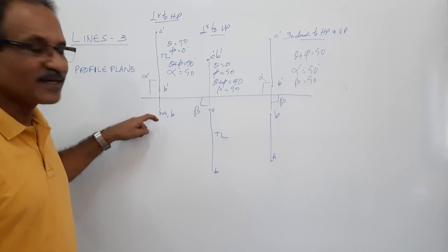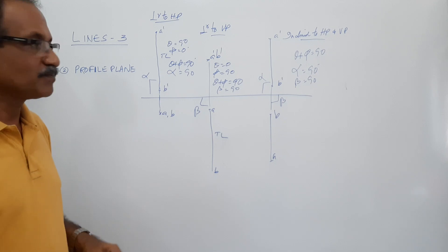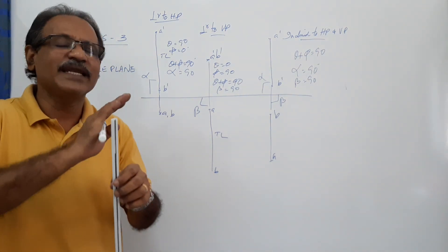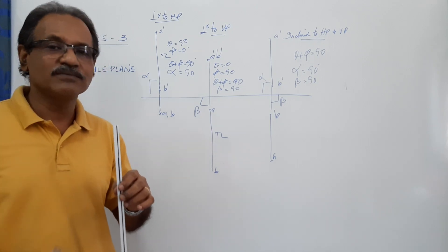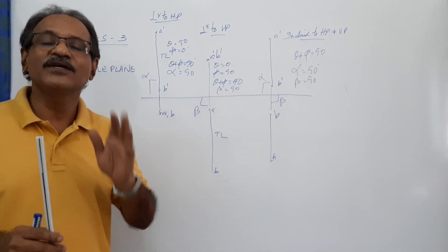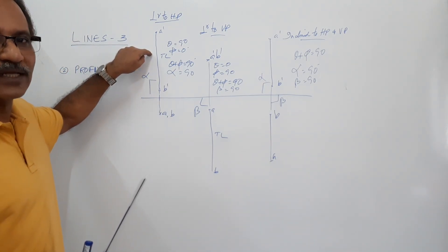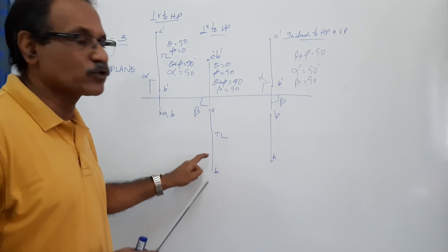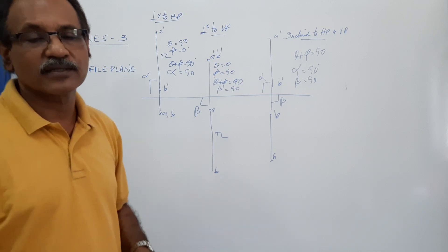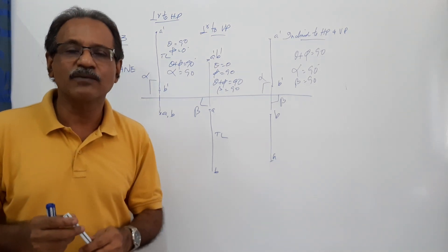To summarize: when a line is in the profile plane, its plan or elevation can never be inclined to XY — they can only be a point or a line perpendicular to XY. If the plan is a point, the elevation is perpendicular to XY and of true length. If the elevation is a point, the plan is perpendicular to XY and of true length. If both are perpendicular to XY, neither is true length — they are shorter. That's all about the profile plane.